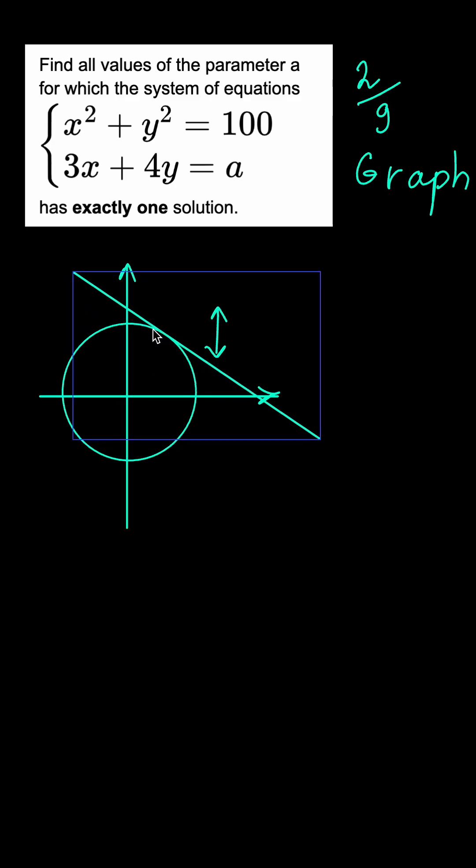We need to find the value of A such that this line is tangent to the circle. First we can observe that there are two such values of the parameter.